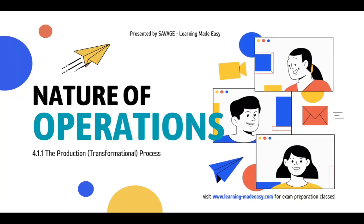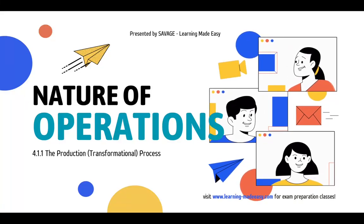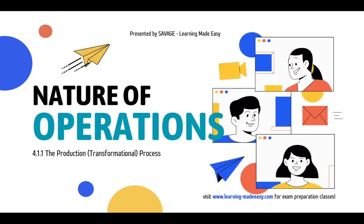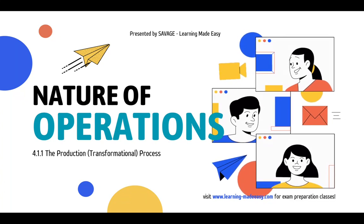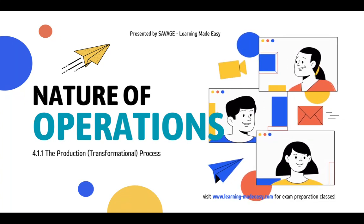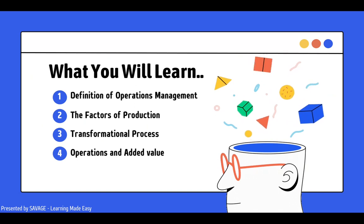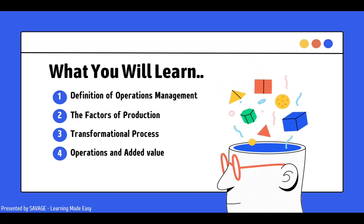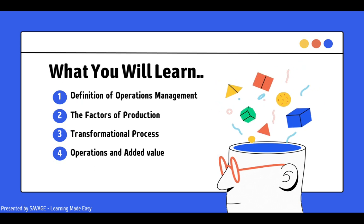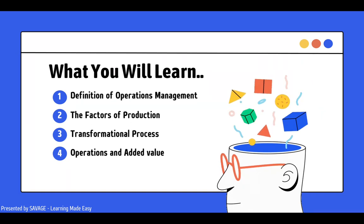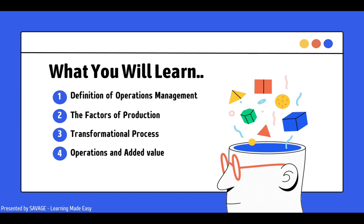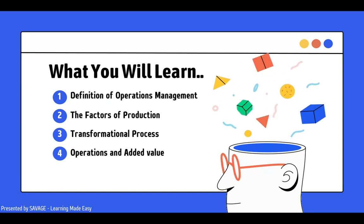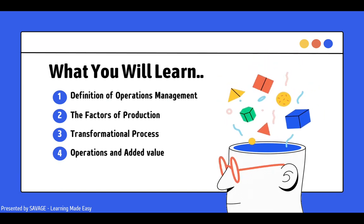Hi everyone. We're moving to the topic of operations, specifically chapter 4.1.1 — the production or transformational process — where we will be learning about four key parts: understanding what operations management means, a revisit to factors of production, what the transformational process is, as well as operations and added value.